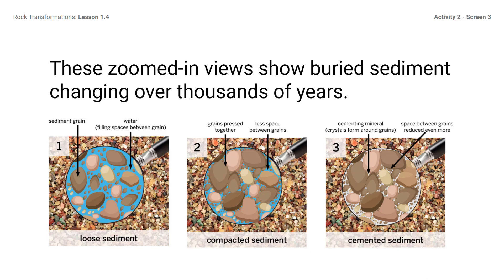When sediment turns into rock, it is through two processes. The first process is called compaction, which is the process of sediment being buried and pressed together. The sediment is buried underground, and the material on top applies a lot of pressure, causing the sediment to compact. The second process is called cementation, which is the process of sediment being glued together. Minerals deposited by water between the sediment act as a glue that binds the sediment together.